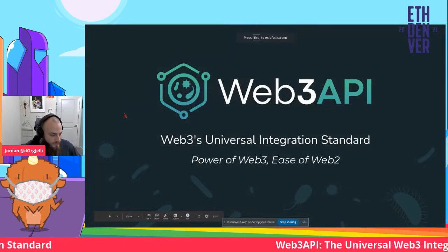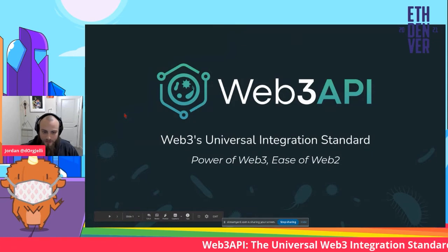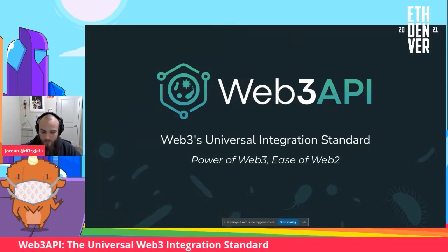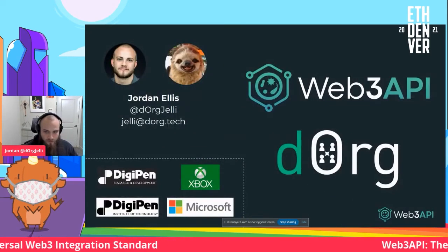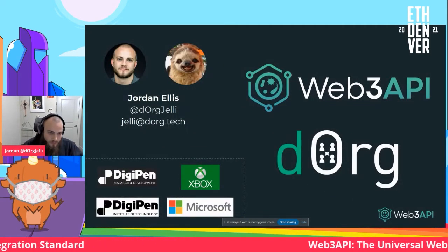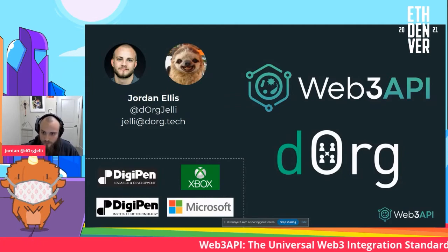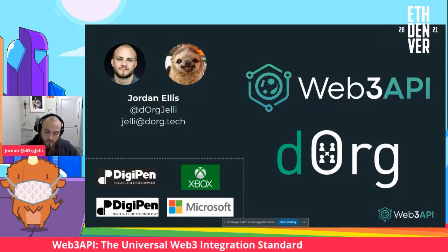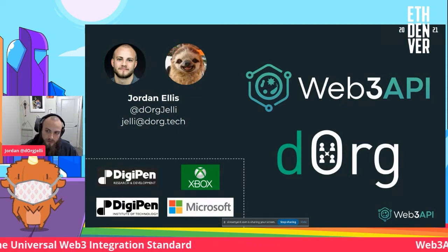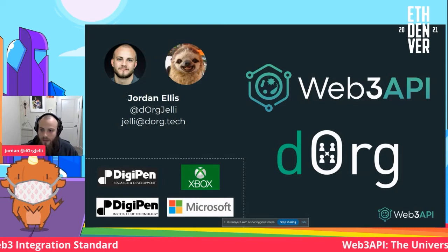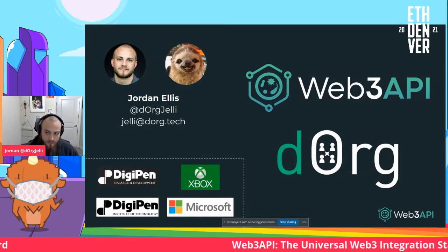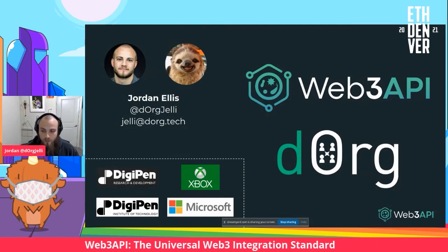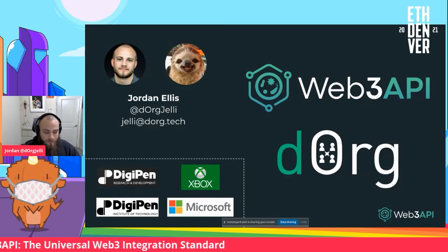I'm here today to talk about this project called Web3 API. It aims to be the Universal Integration Standard for Web3. My name is Jordan, I go by Doric Jelly on all the different platforms. I have a history working in a lot of closed source and corporate software, and I left about two years ago. I've been working with the Diorg Collective, which is a dev shop that runs itself as a DAO, and out of that spun the Web3 API project.